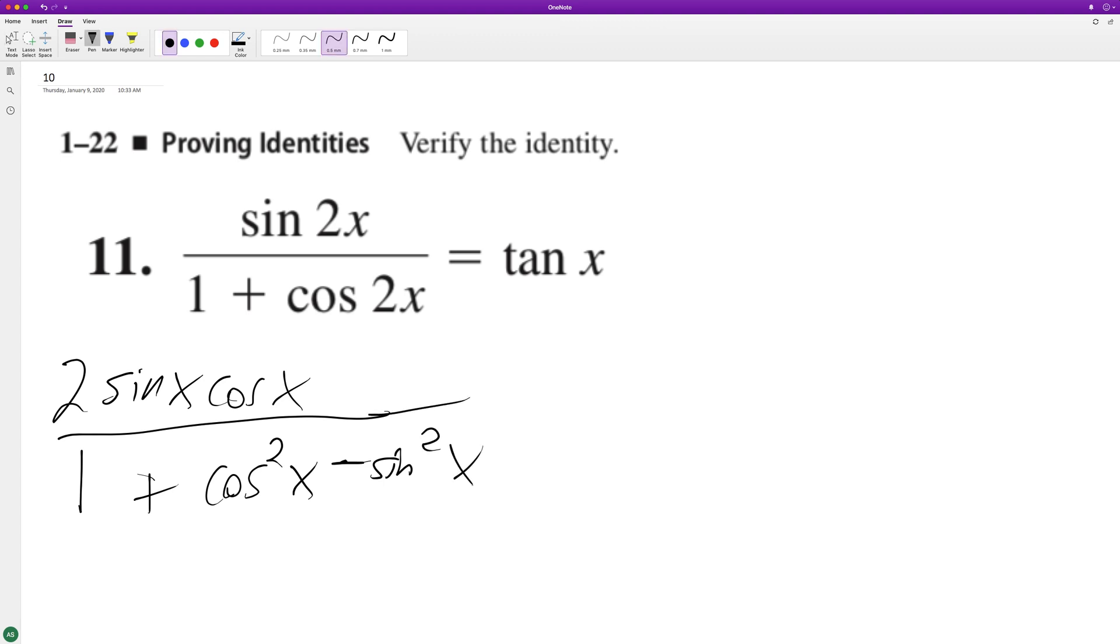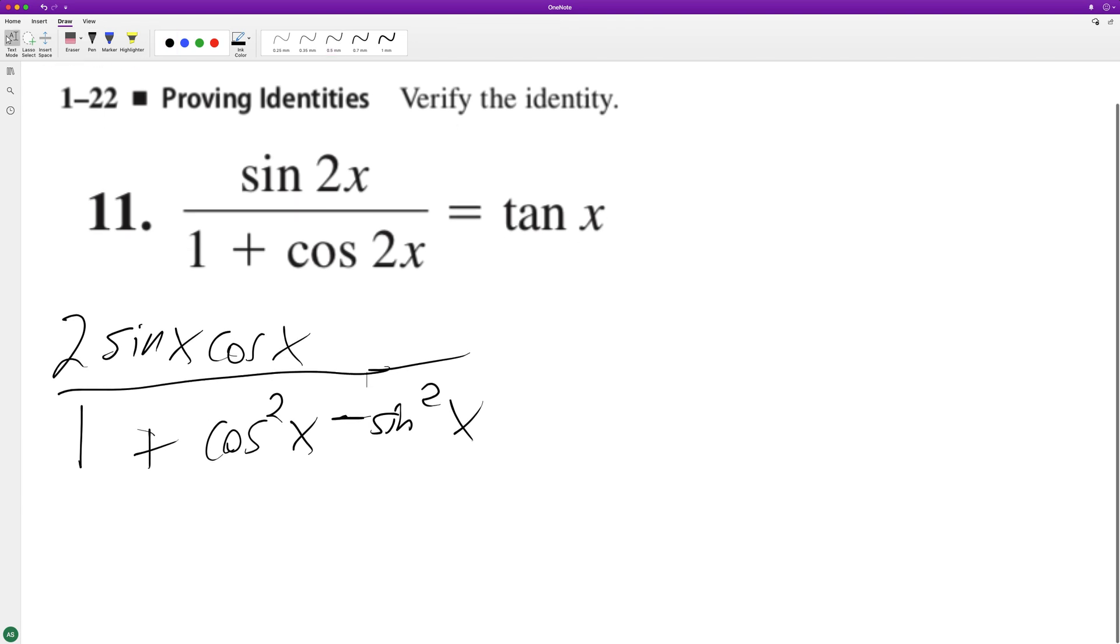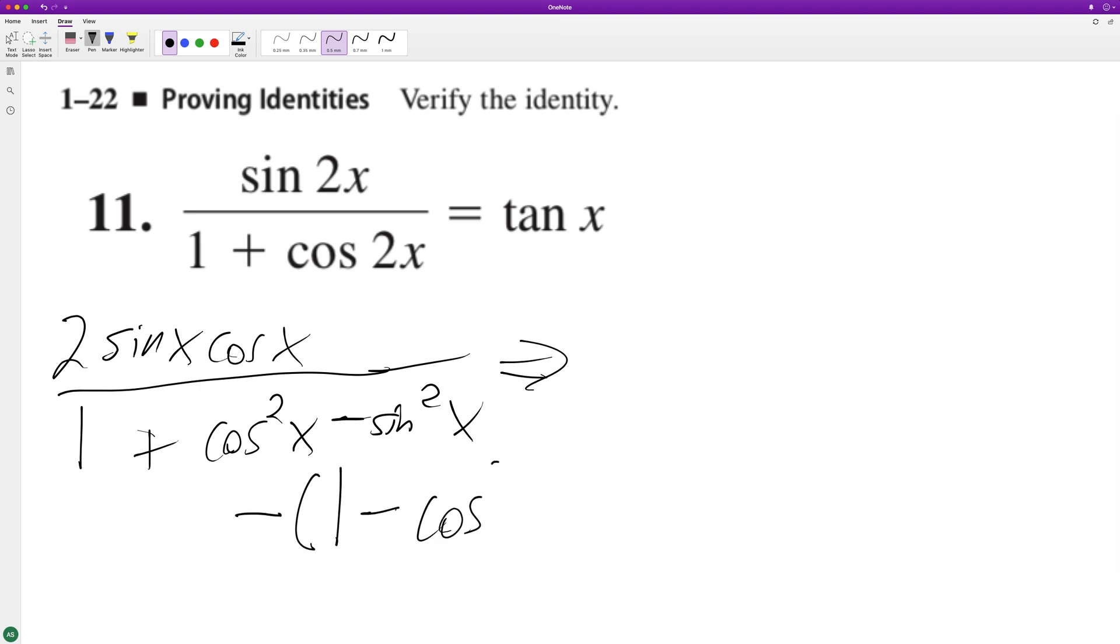So, trying to figure this out. Minus sine squared x, one minus. I know what to do. So, cosine's on the bottom, which means we can convert. Yeah, okay, I know what to do. All right, so we can convert this into minus one minus cosine squared x.